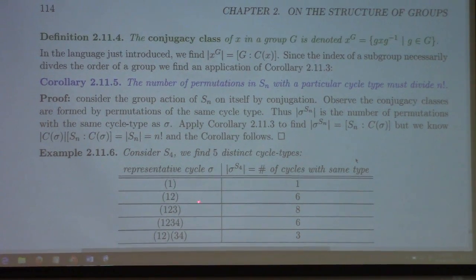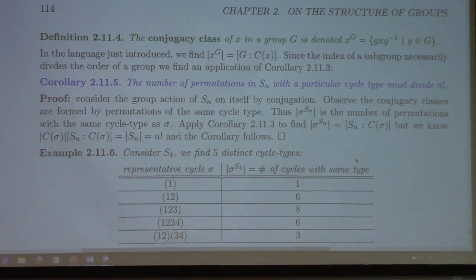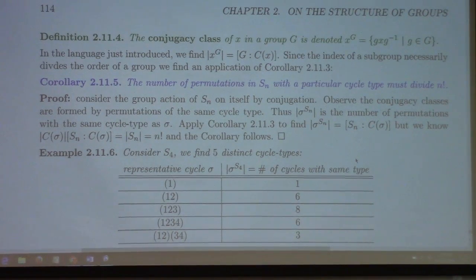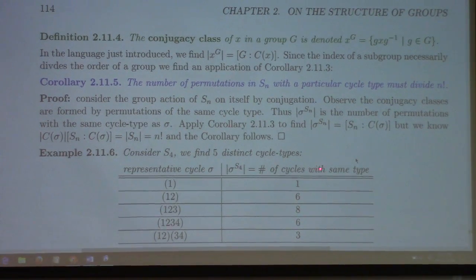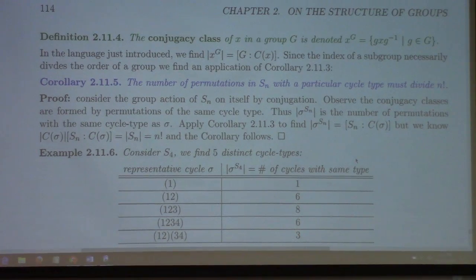That's why we get this pattern. The number of each cycle type — just one identity, six transpositions, eight 3-cycles, six 4-cycles, and three products of two disjoint transpositions — these are all divisors of 24, which is 4!. That's not an accident; that is exactly what this says. But more than that, the sum of these numbers also has to equal 24, because the cycle types partition all permutations collectively forming S4. So N! can be written as a sum of particular divisors.